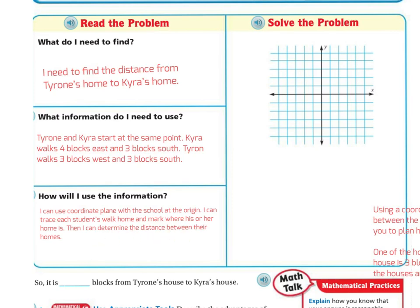Let's map it out since both start at the same point. Kyra walks four blocks east — one, two, three, four — and three blocks south — one, two, three. Tyrone walks three blocks west and three blocks south. So this is Tyrone's home and that's Kyra's home.